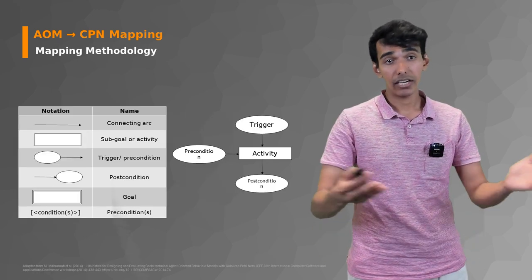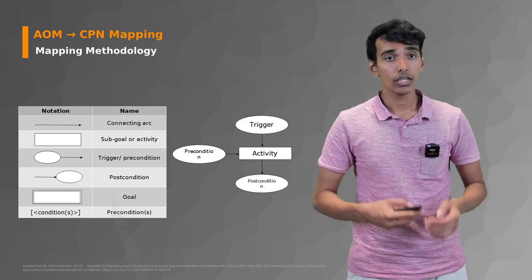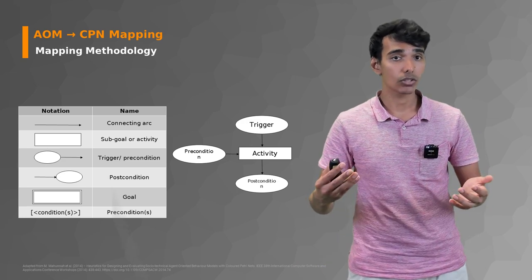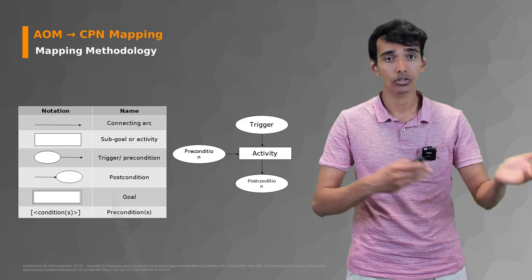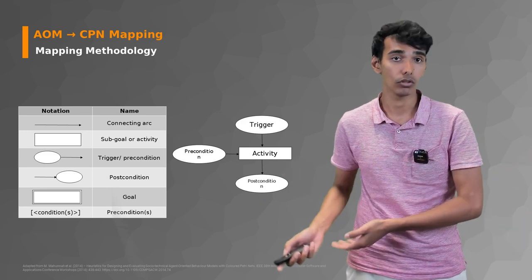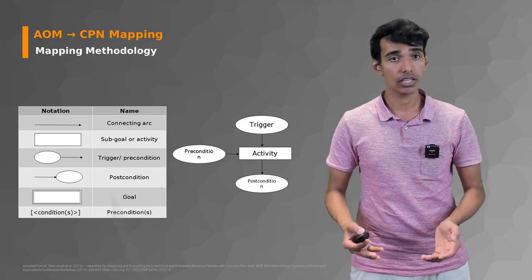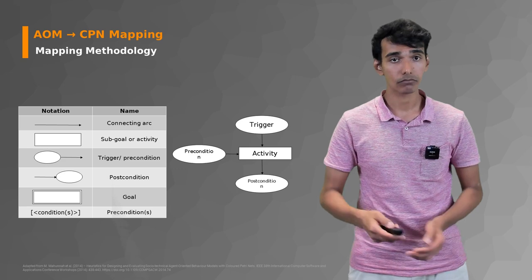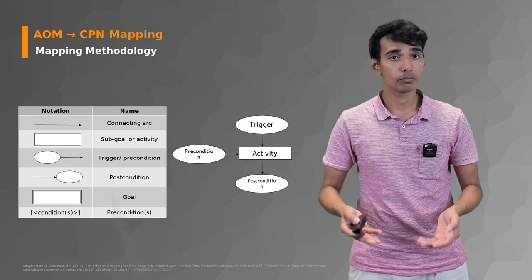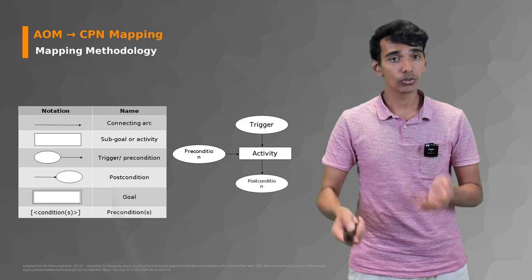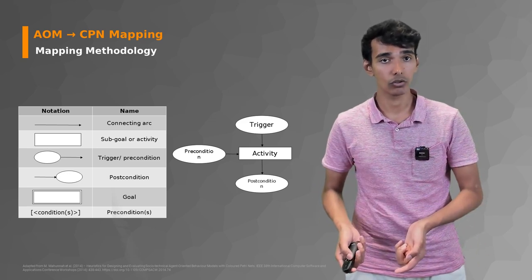We already have the notation for goal models and for CPN models. Now there is also a method for how we map the notation of goal models to CPN models. Inside of the CPN model, you have the notation for arrows, which are the connecting arcs. Whenever you have a transition in a CPN model, these are used as the mapping from the sub-goals or activities from agent-oriented goal mapping.